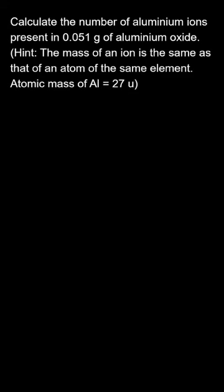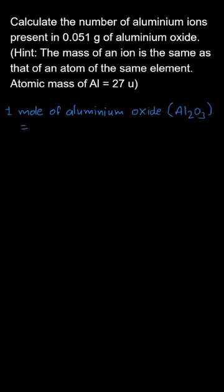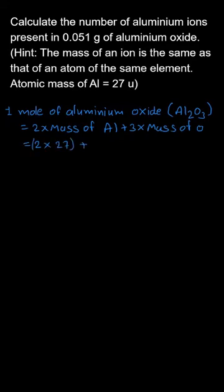First, we need to calculate the mass of one mole of aluminium oxide. Aluminium oxide has the chemical formula Al₂O₃, which means we multiply the mass of aluminium by 2 and the mass of oxygen by 3. With aluminium at 27 and oxygen at 16, one mole of aluminium oxide has a mass of 102 grams.